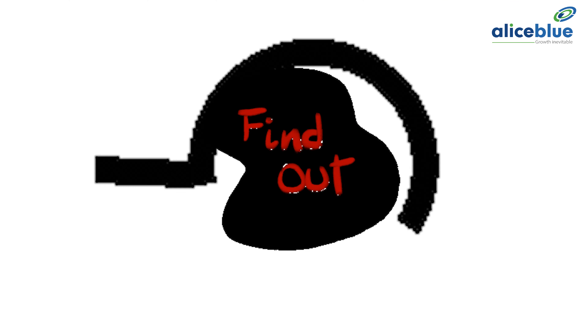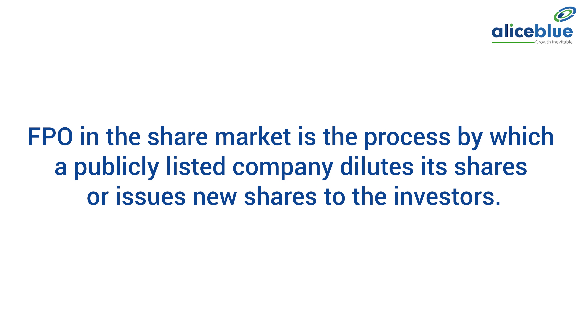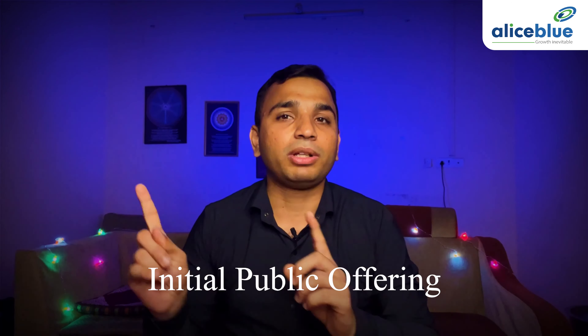What are those reasons? Let us find out. FPO in the share market is the process by which a publicly listed company dilutes its shares or issues new shares to the investors. So a company opts for FPO when it wants to raise capital by offering more shares to the public after the IPO. IPO is Initial Public Offer.